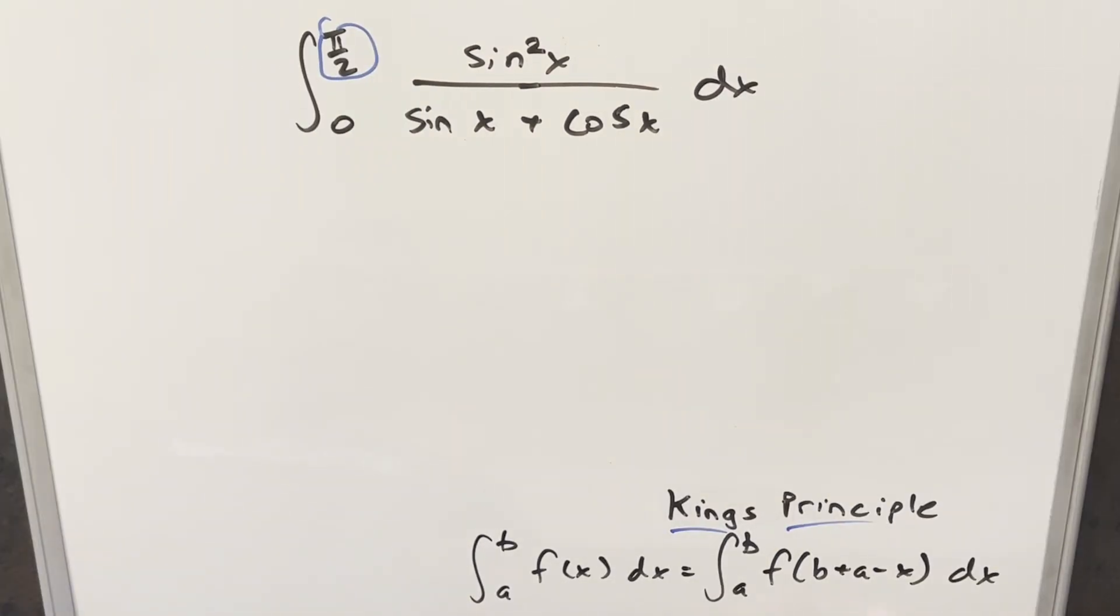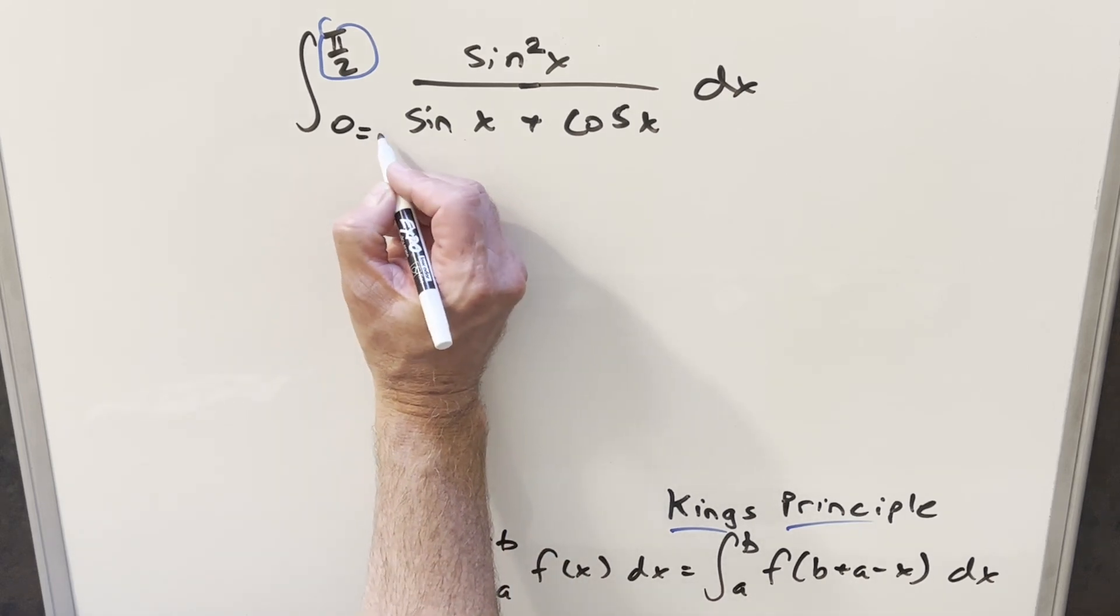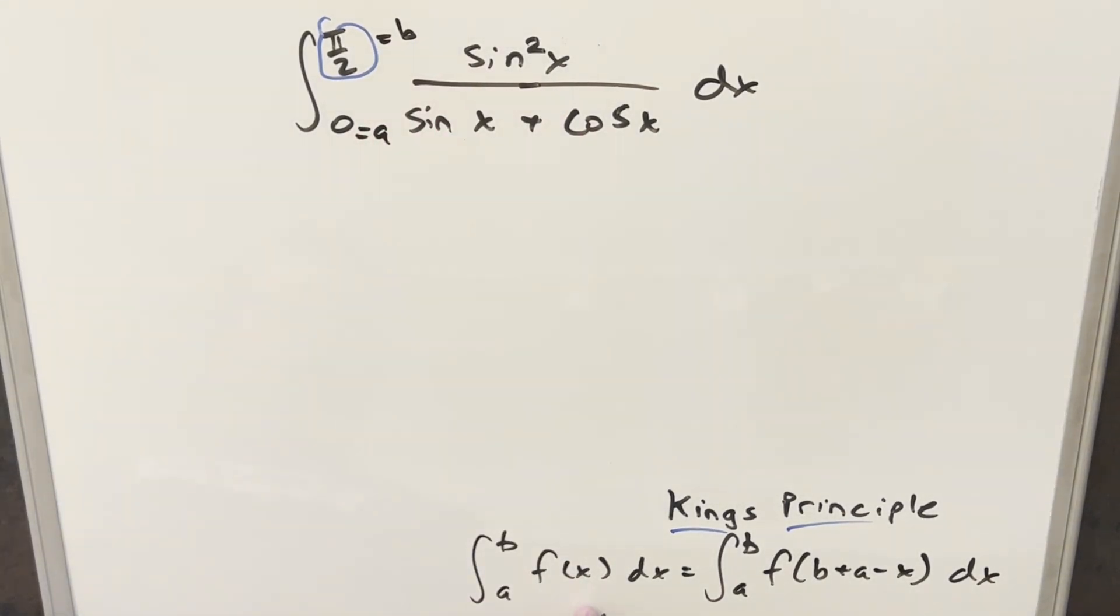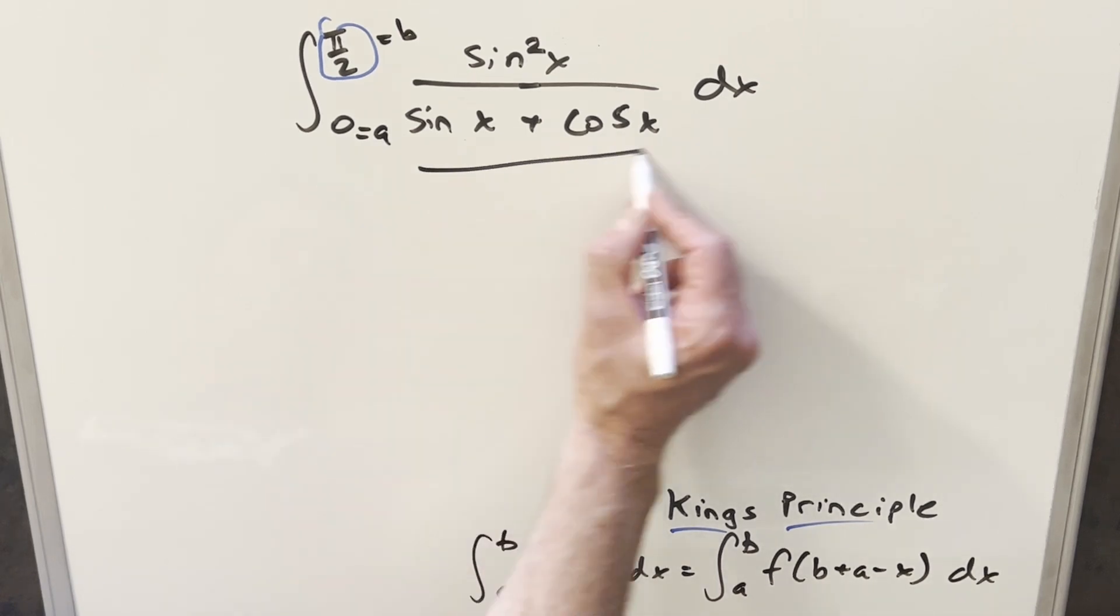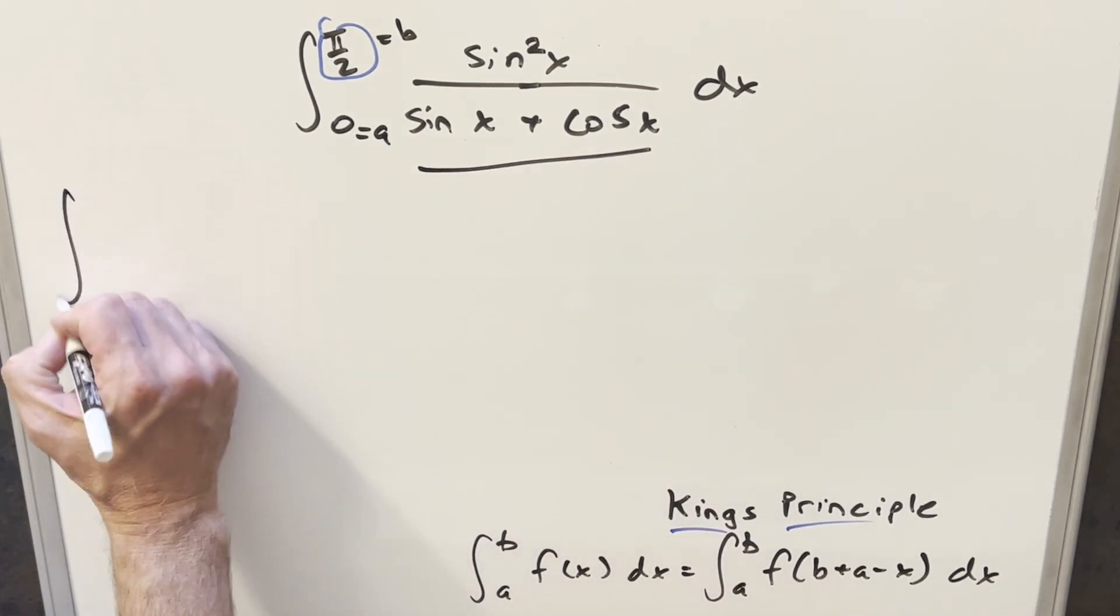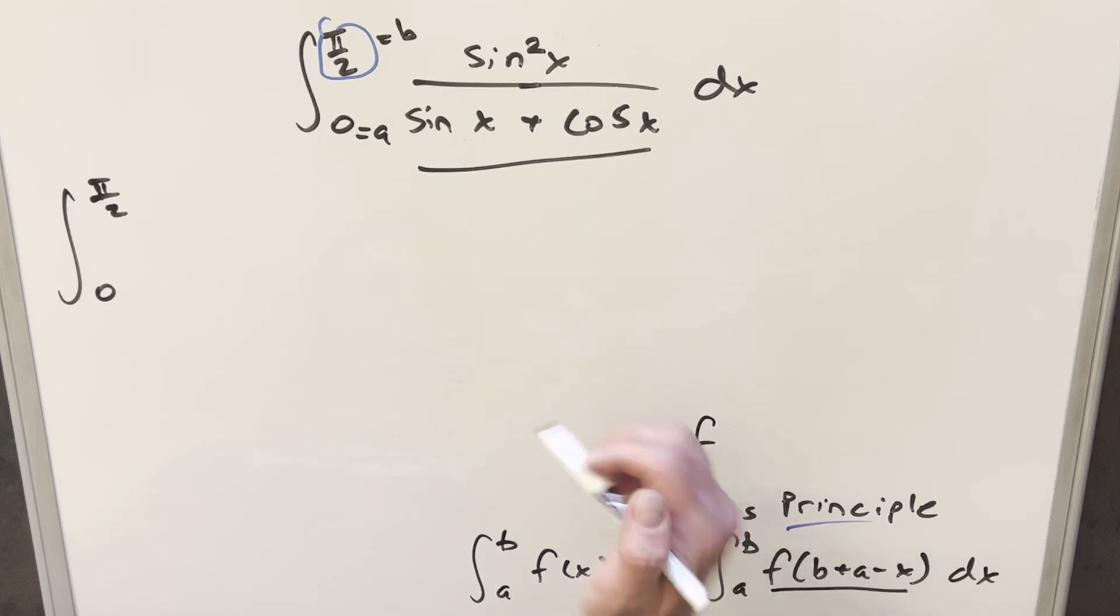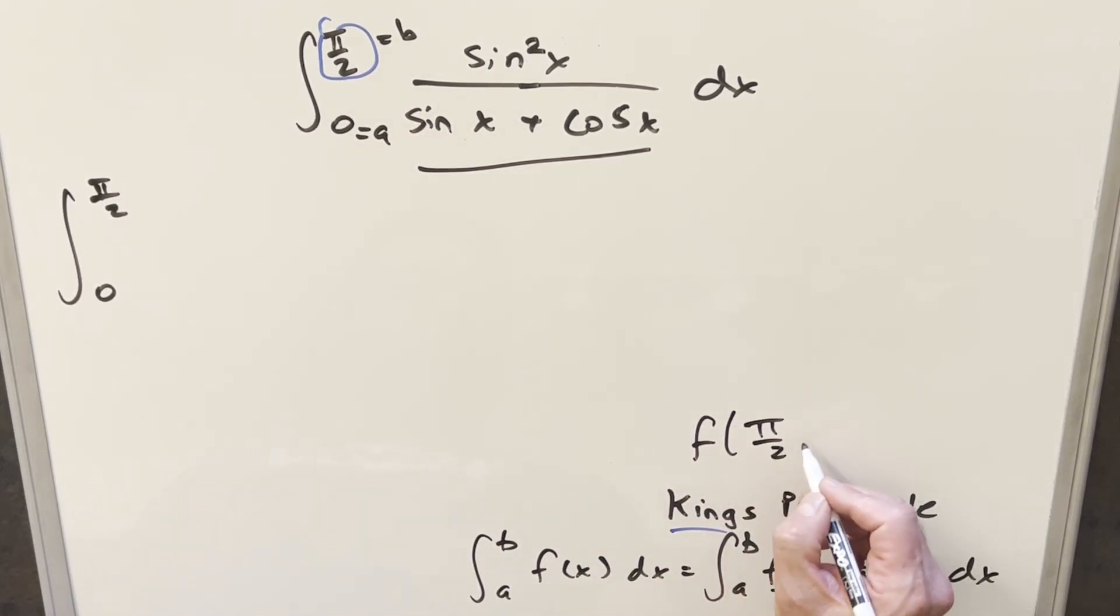So we have our King's principle down here to the right. And what we're going to do is for our a and b value, our a value is going to be 0, our b value is going to be π/2. So our f of x is all this thing. So what we're going to do is to transform this first, our bounds are going to stay the same. So we're still going from 0 to π/2. Then we need this f of b plus a minus x value. All we need to do is add the bounds. Adding a and b, we get π/2. And then we're going to have minus x.